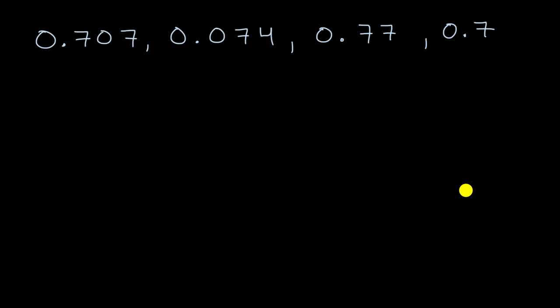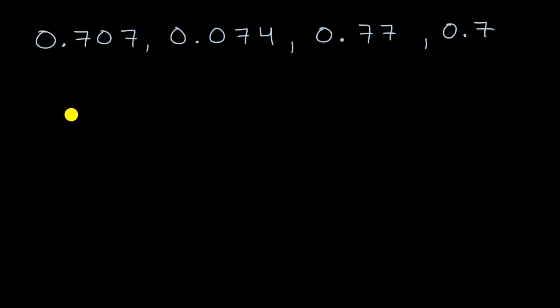All right, now let's tackle this together. The way that I like to do it is I start at the most significant place value, or the largest place value, compare the numbers, and then keep moving to the right to smaller and smaller place values.